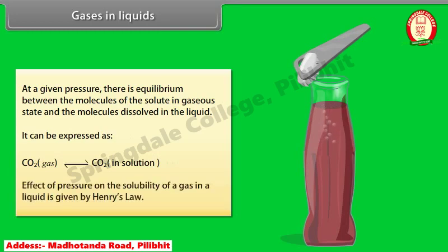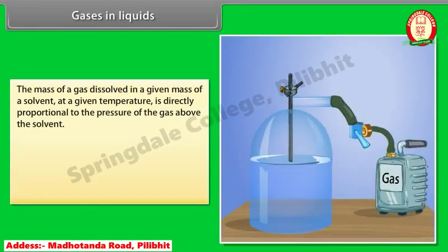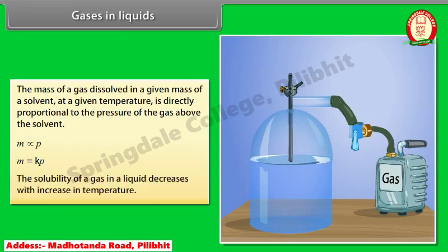The effect of pressure on the solubility of a gas in a liquid is given by Henry's law. This law states that the mass of a gas dissolved in a given mass of a solvent at a given temperature is directly proportional to the pressure of the gas above the solvent: M is directly proportional to P, or M = KP. The solubility of a gas in a liquid decreases with increase in temperature.